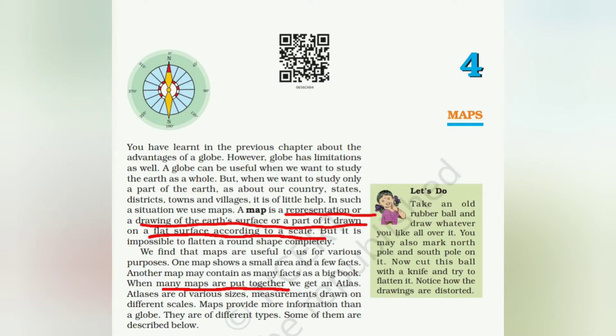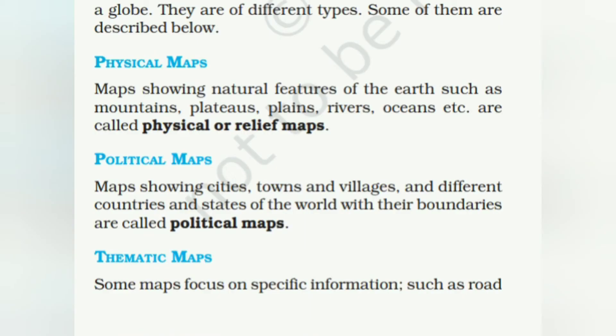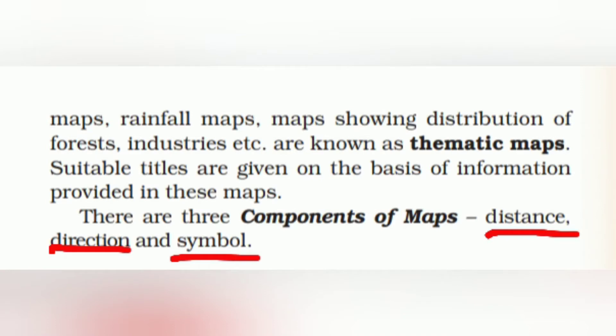Chapter 4 covers Maps. A map is a representation or drawing of Earth's surface or part of it on a flat surface according to a scale. When many maps are put together, it's called an atlas. Types of maps: physical maps show natural features like mountains, plateaus, plains, rivers, and oceans; political maps show cities, towns, villages, countries, and states with boundaries; thematic maps show specific information like road maps or rainfall. Components of maps are distance, direction, and symbol. Distance on paper corresponds to actual distance via scale; directions are found with a compass.